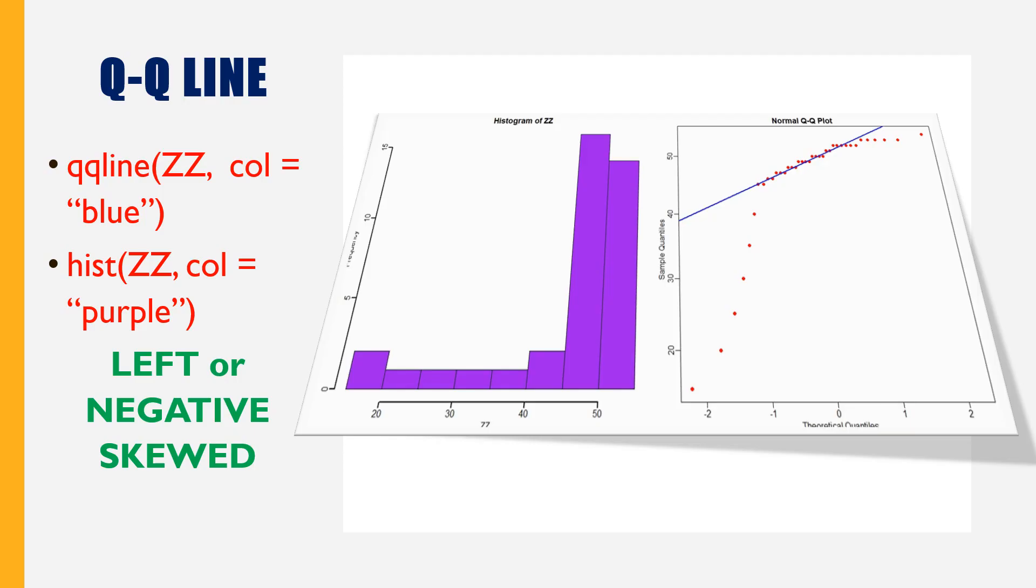ZZ is a data set with some values. In this slide we have done Q-Q line. Q-Q line is a straight line we can draw inside a Q-Q plot. We can draw Q-Q line with qqline. As you can see, qqline ZZ and the color blue.